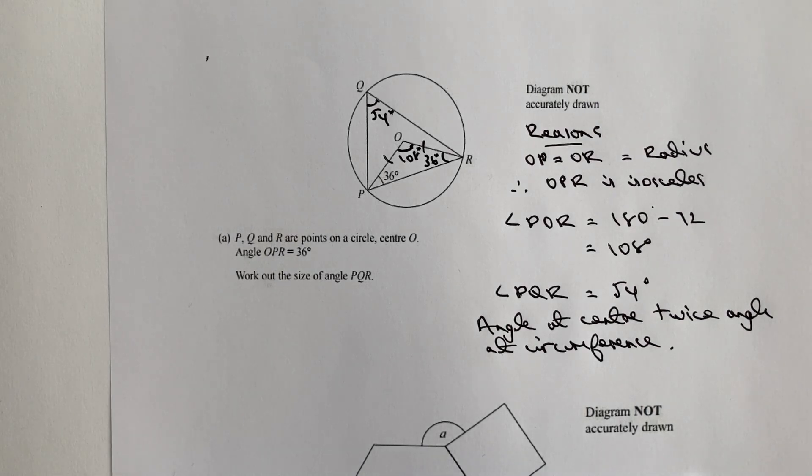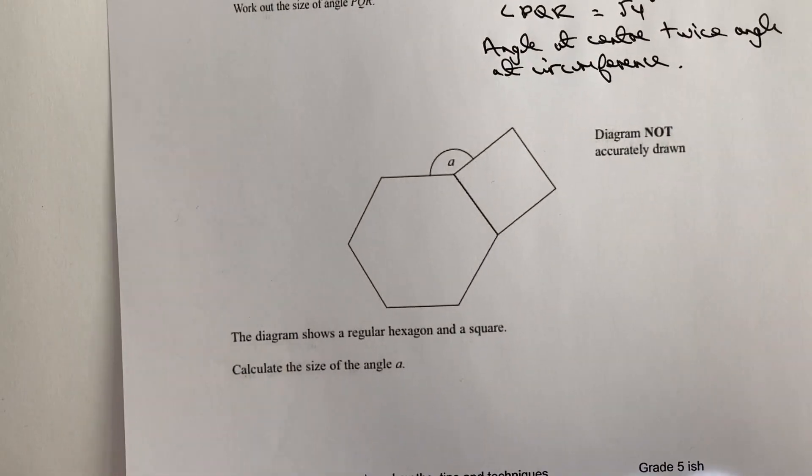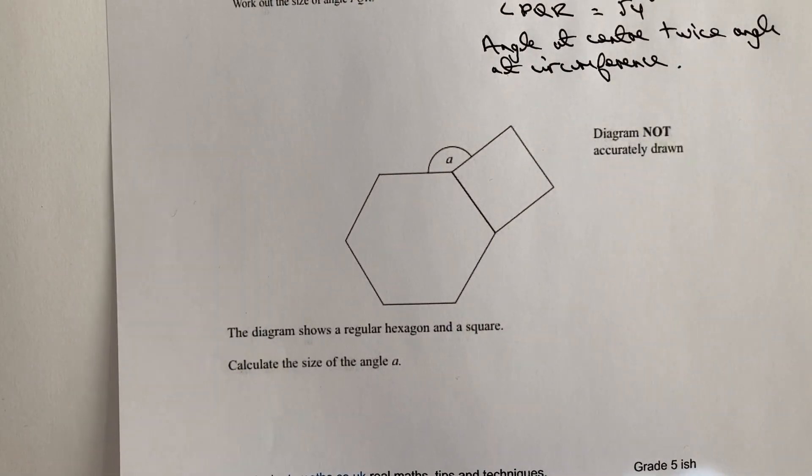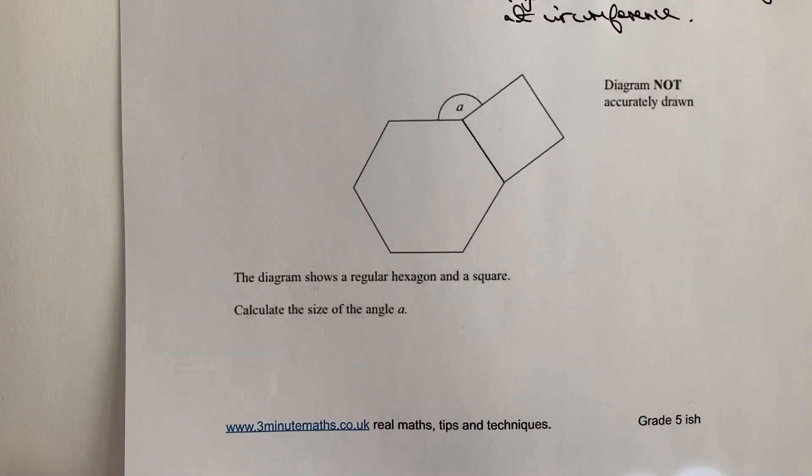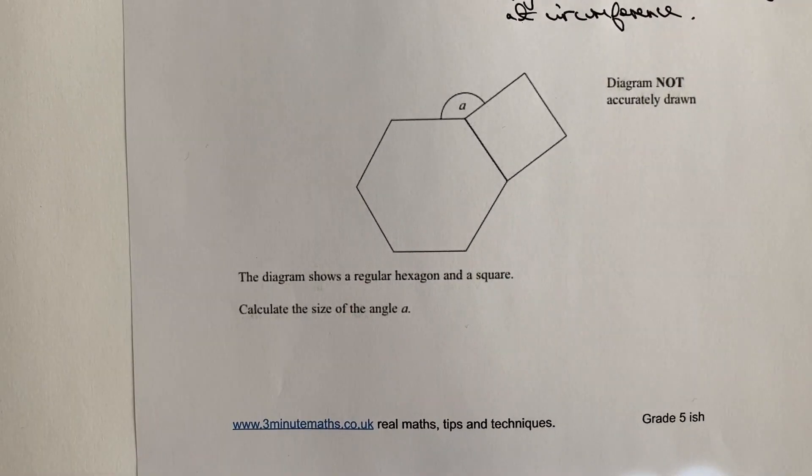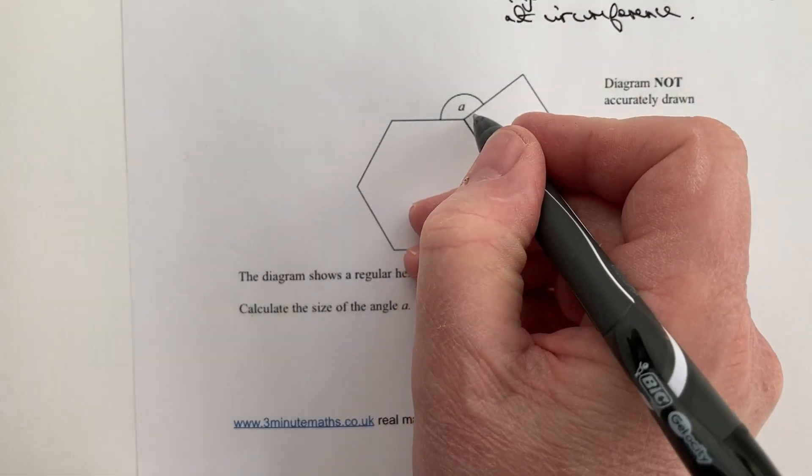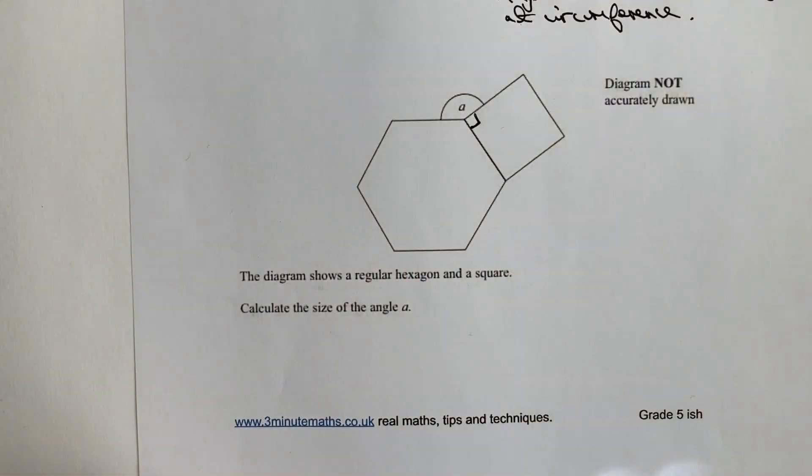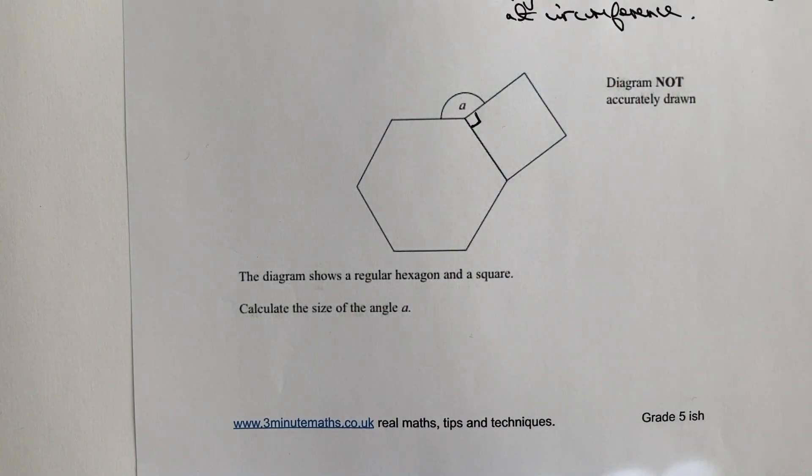Let's have a look then at the second question which is a similar sort of question, it's just knowing some information about regular shapes. In this particular case we've got a regular hexagon and a square. Now we're being asked to work out the size of angle a. Well hopefully you're okay with that, this bit being 90 degrees, so we actually know that the angle in the corner of a square is going to be 90 degrees.